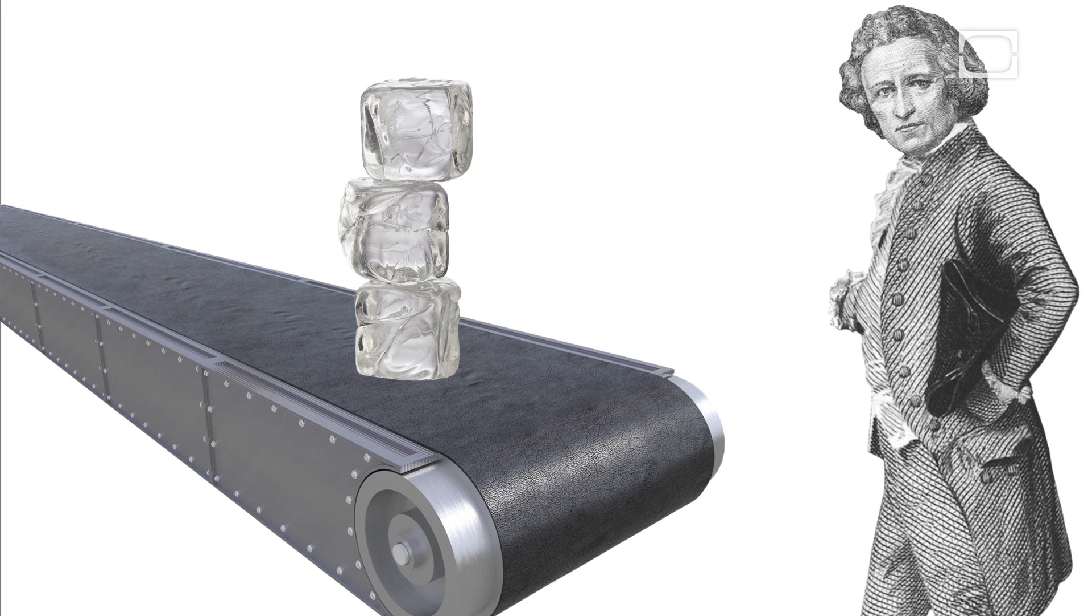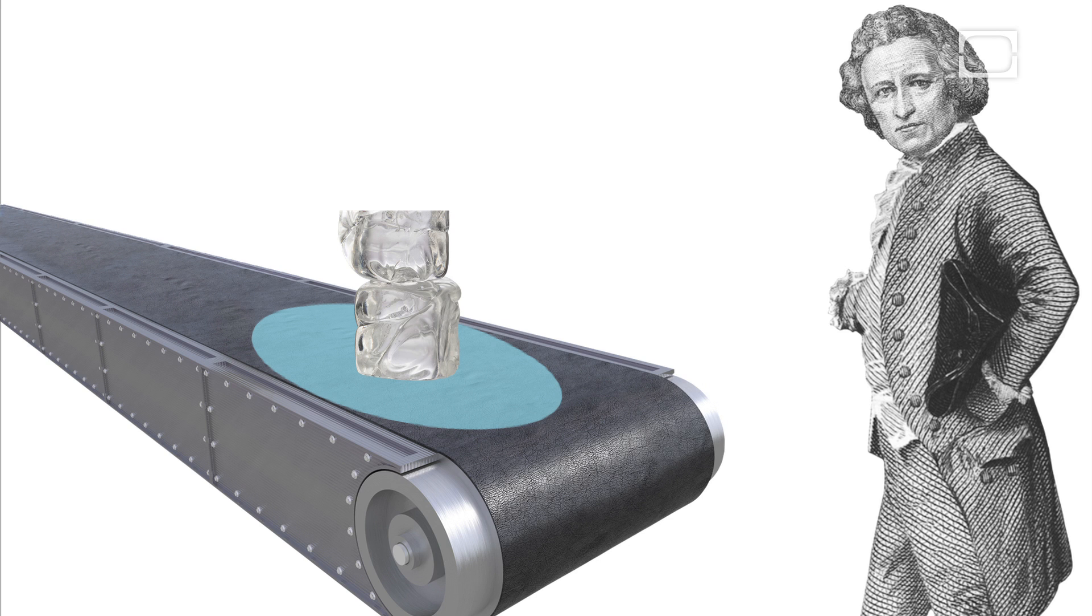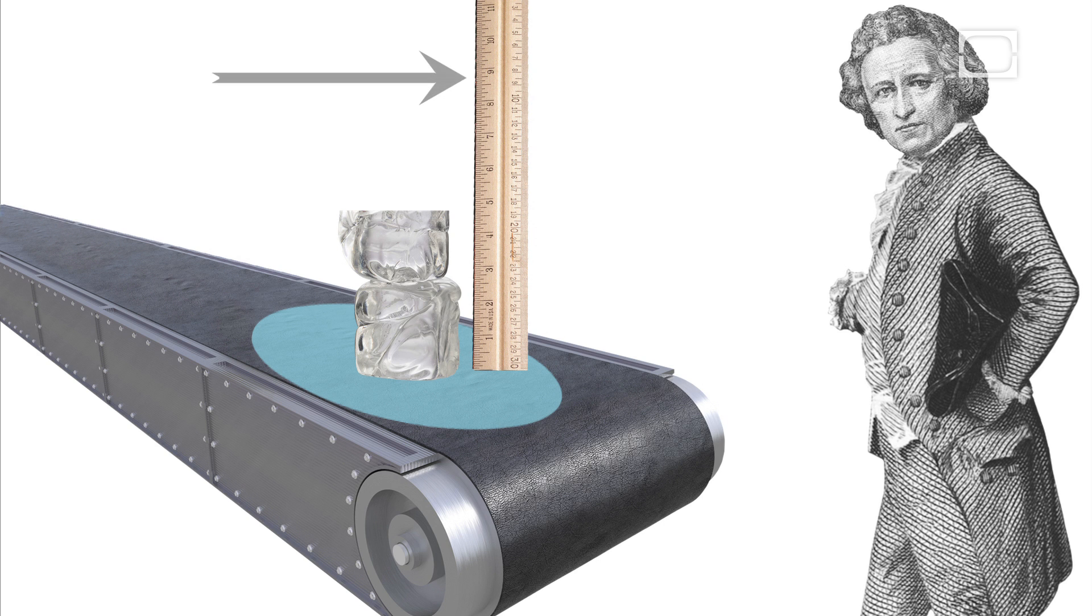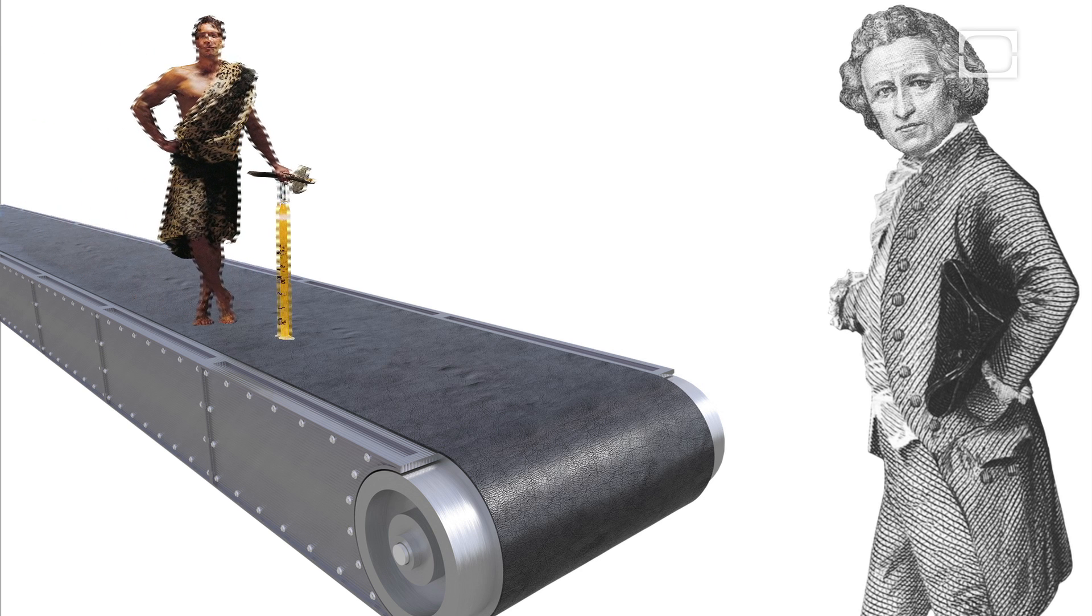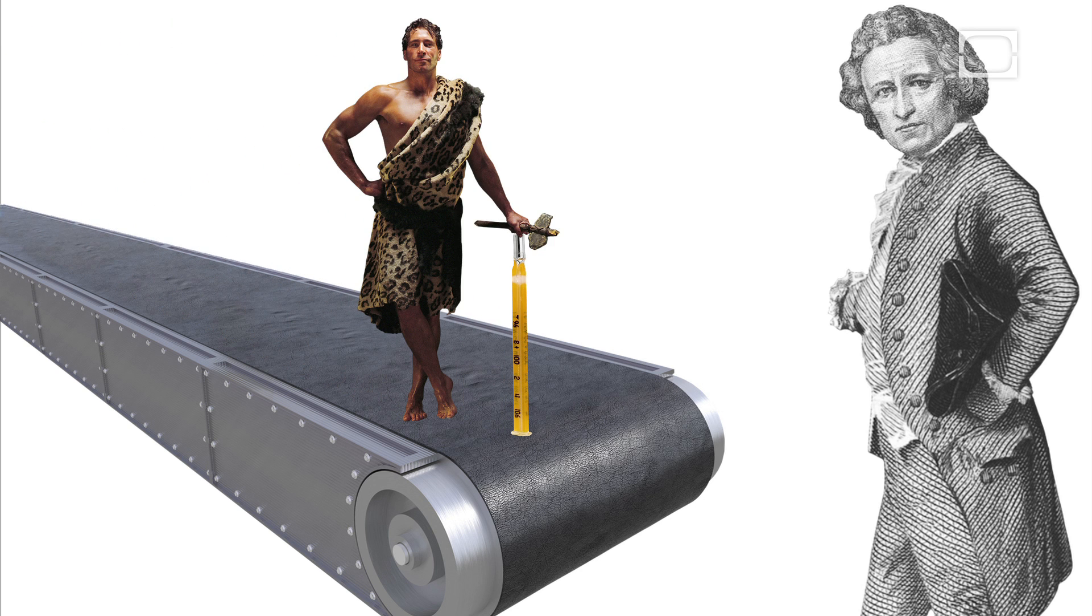First, a reliable way of indicating a change in temperature. Second, a scale against which to measure these changes. But here's the problem. Neither of these things existed in the 18th century. Sure, people had been making thermometers for centuries, but they weren't precise.